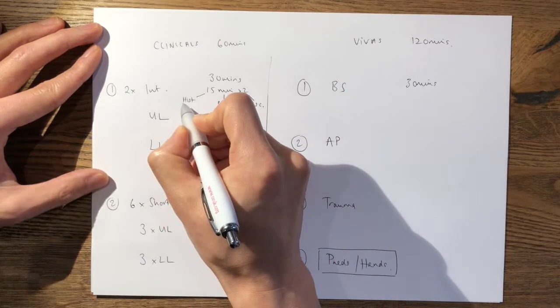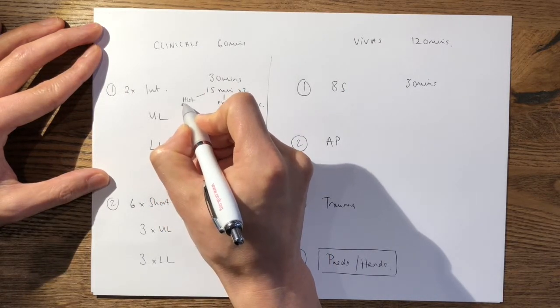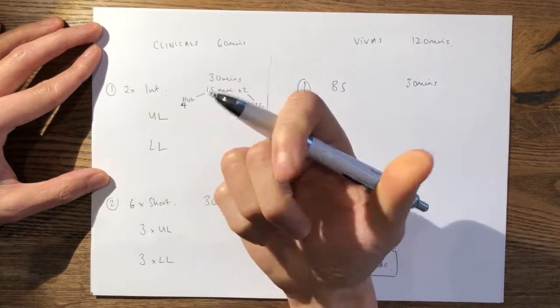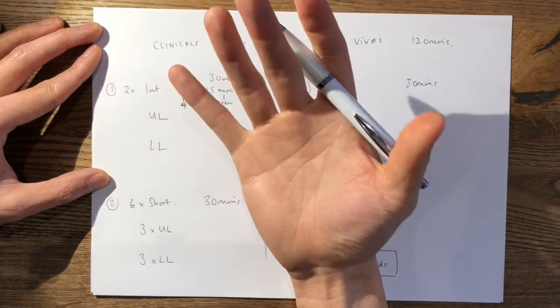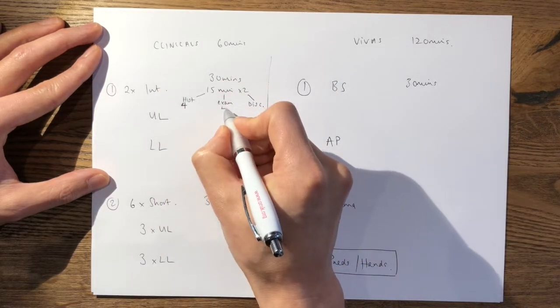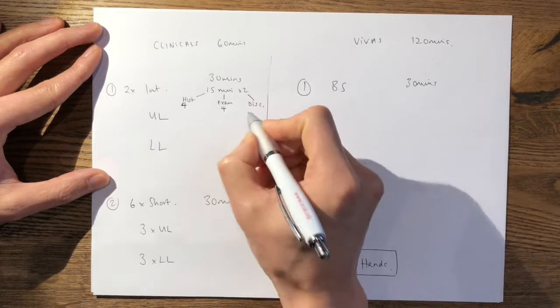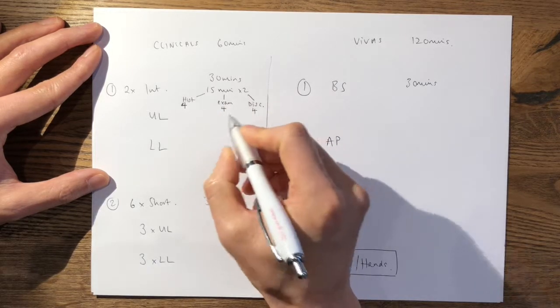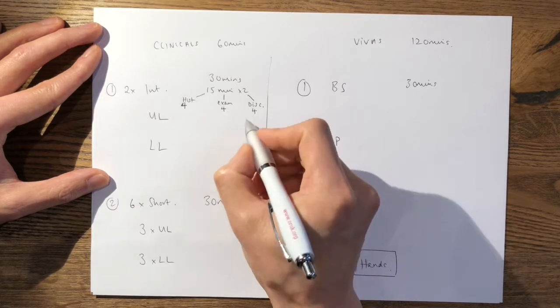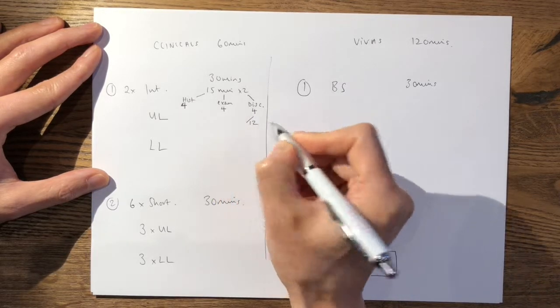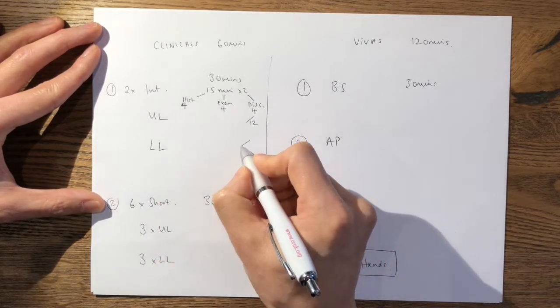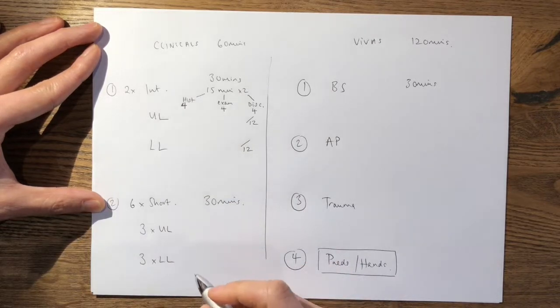So in those four domains, you'll have four scoring opportunities in history taking, one for each of those four domains which will be an average of your two examiners. Again, you'll have four scoring opportunities for your examination and four scoring opportunities for your discussion in those five minutes. So you have overall 12 scoring opportunities for your upper limb intermediate and again similarly 12 scoring opportunities for your lower limb intermediate.